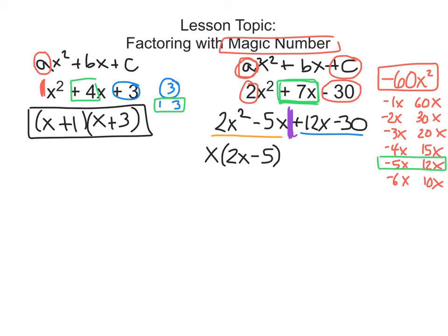Now I'm going to do the exact same thing to the right-hand side of the purple line — factor out the GCF. This time I don't have an x to factor out because the 30 doesn't have an x. But 12 and 30 are both divisible by 6. We're going to use this plus sign — whatever that sign is, it comes straight down. The GCF is 6, so we're going to factor out a 6. 12x divided by 6 leaves 2x. The minus stays, and negative 30 divided by 6 is negative 5.